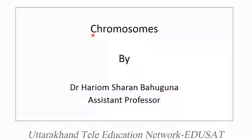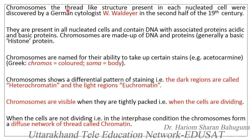Our today's topic is to discuss about the chromosomes. Every nucleated cell has a thread-like structure and these thread-like structures are called chromosomes. Chromosomes were first discovered by a German cytologist W. Waldeyer in the latter half of the 19th century. They are present in all nucleated cells and these chromosomes are made up of DNA and protein.